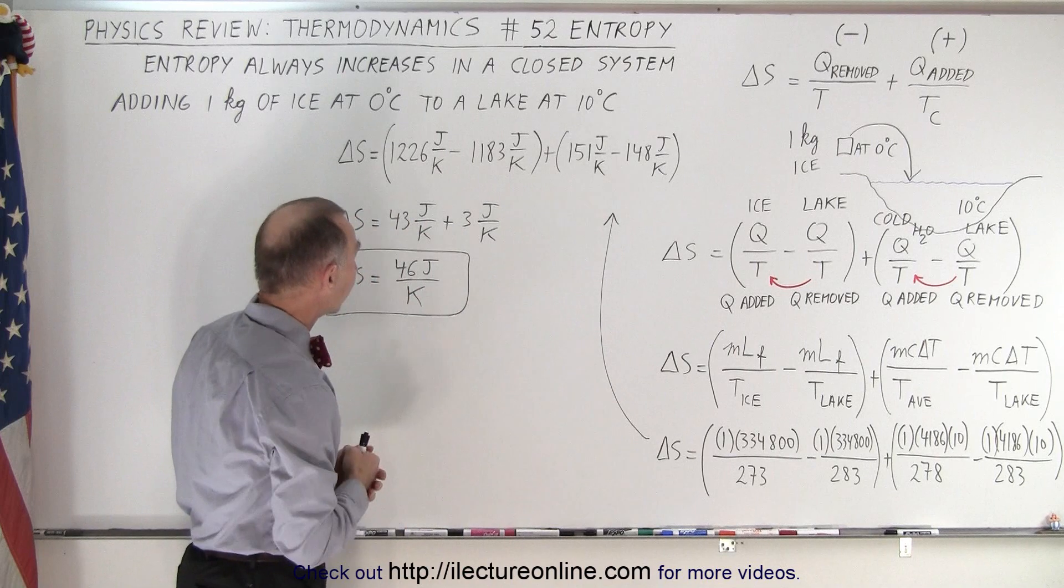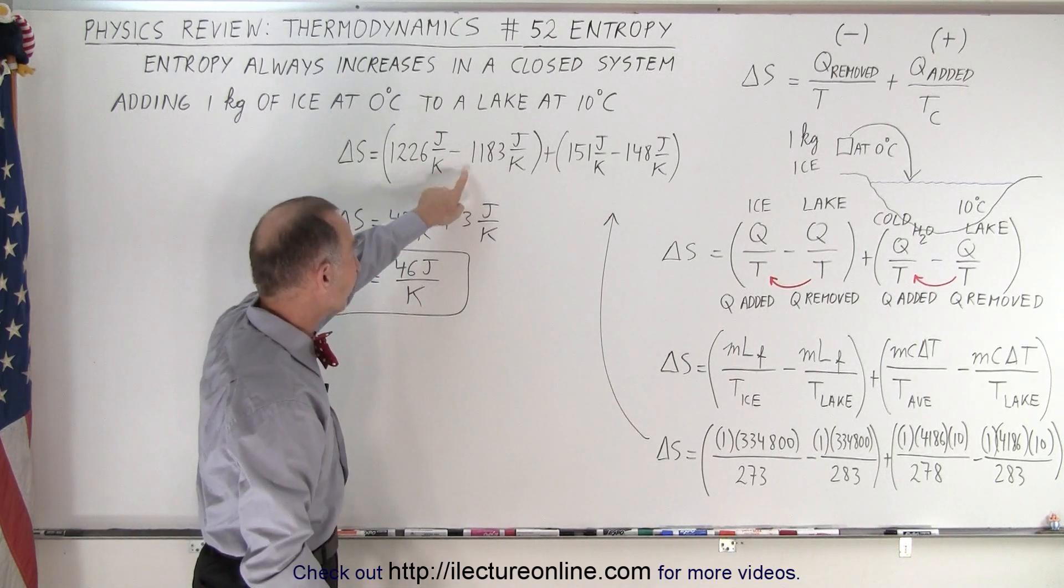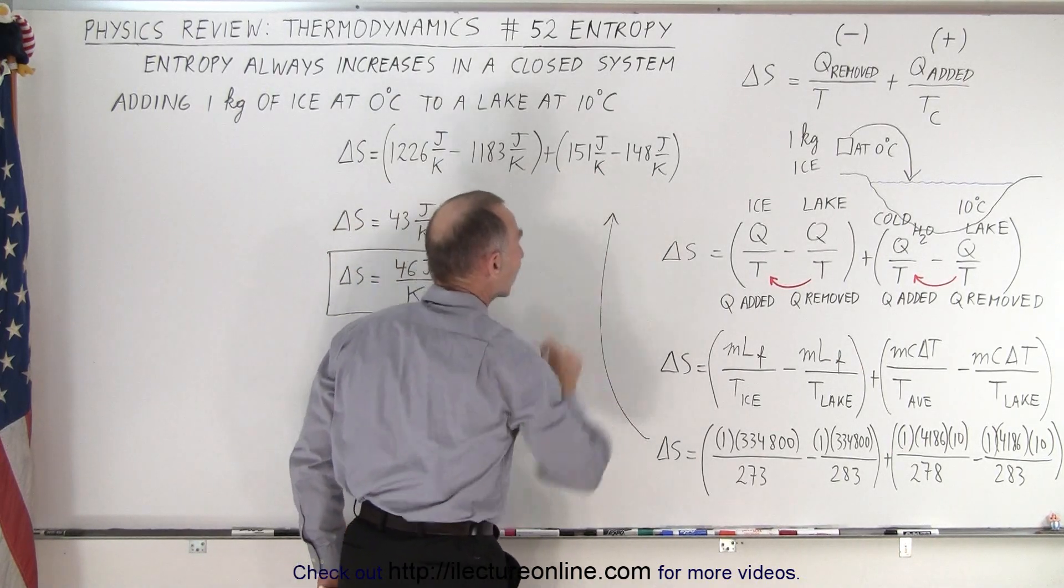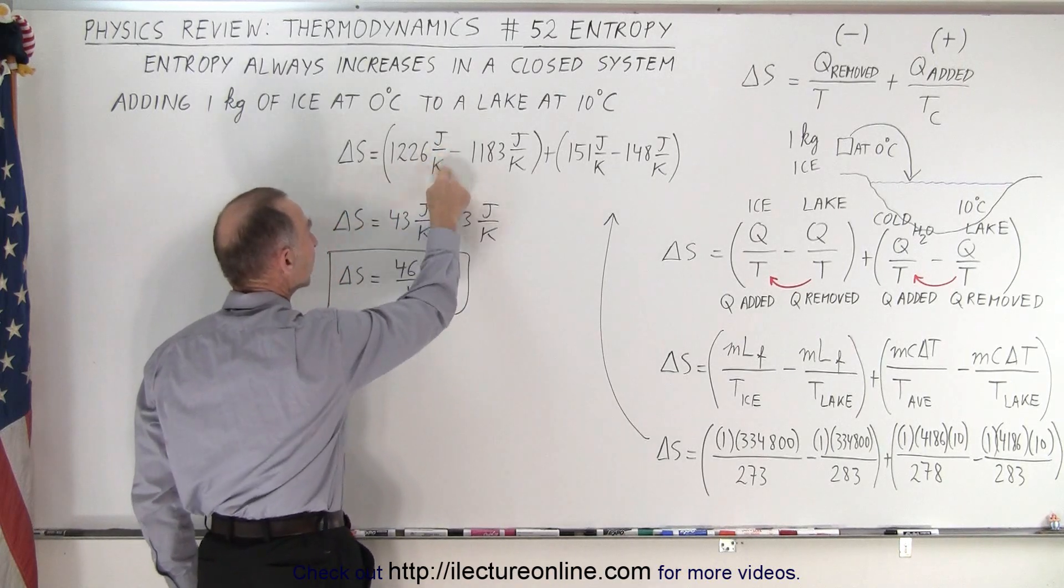Then, of course, all we have to do is crank our calculator out, we end up at 1226 minus 1183 for the melting of the ice, and 151 minus 148 for the cold water to become 10 degrees Celsius. The units for the change in entropy is joules per Kelvin,